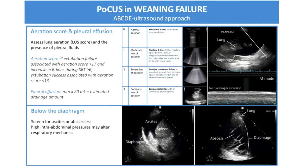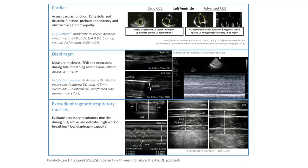In a nutshell, the weaning process with ultrasound involves: assessing aeration scores, removing effusions, looking below the diaphragm for ascites or any cause of a tense or distended abdomen, assessing cardiac status, and assessing diaphragmatic status — and going forward, assessing extra-diaphragmatic muscles as well. All of this will optimize the patient for weaning. Thank you, and I apologize to people who did not understand anything of what I said.